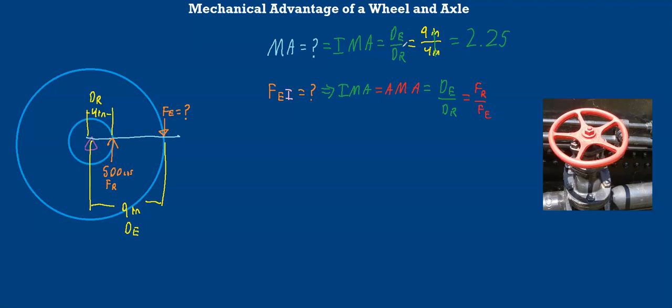And we know our DE over our DR, that hasn't changed. That is still 9 inches over 4 inches. So we can set that equal to our force resistance, or 500 pounds, divided by our ideal effort force.